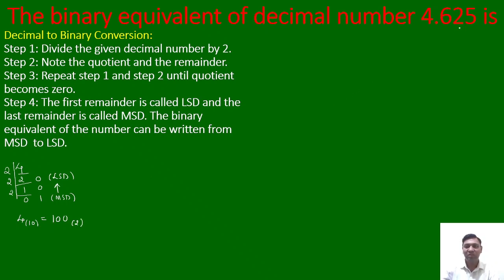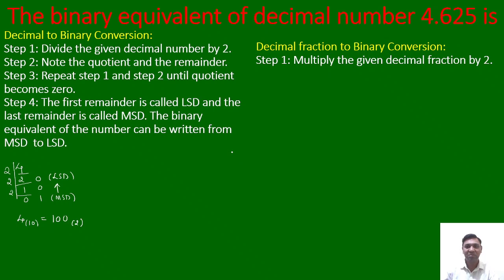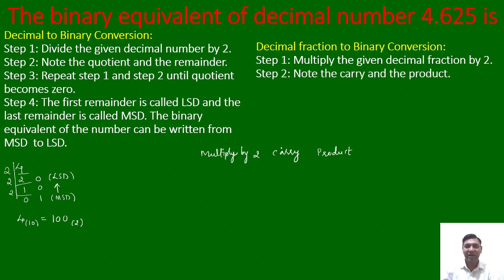Now let us move on to the fractional part. 0.625 can be converted using the decimal fraction to binary conversion procedure. For the first step, we multiply the given decimal fraction by 2. We will set up three columns: the first column for the number being multiplied, the second column for the carry, and the third column for the product.